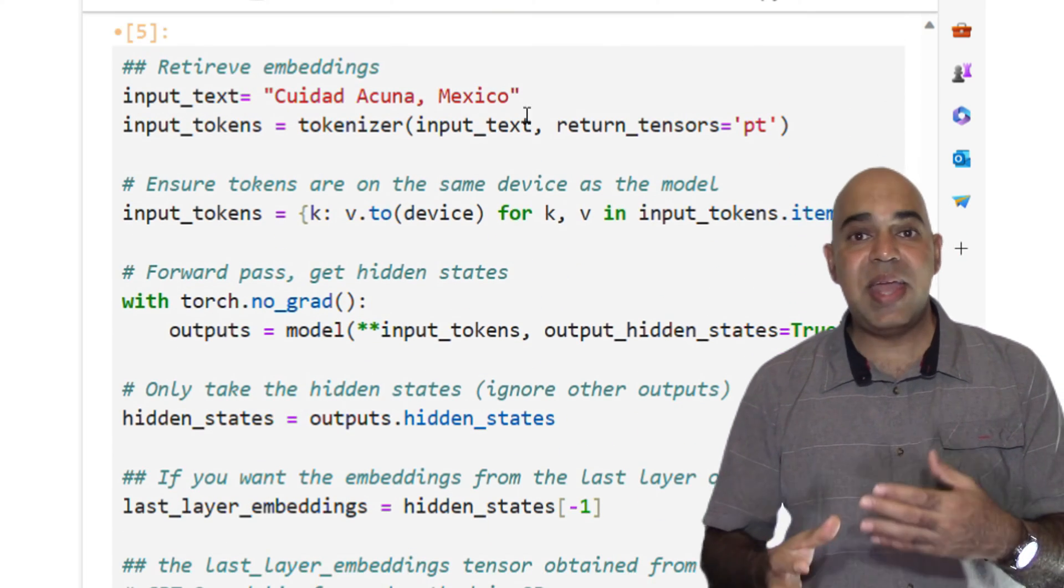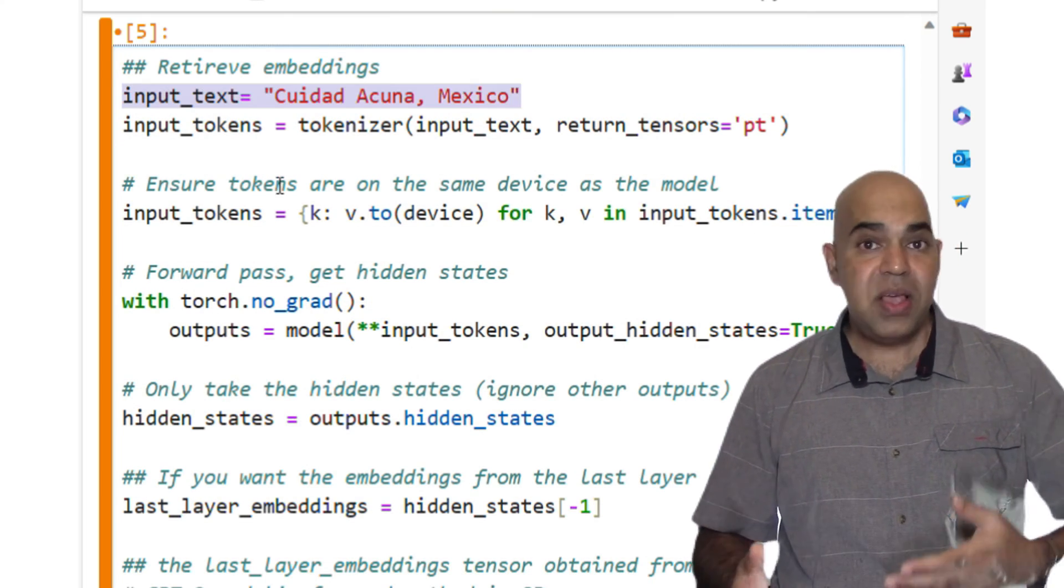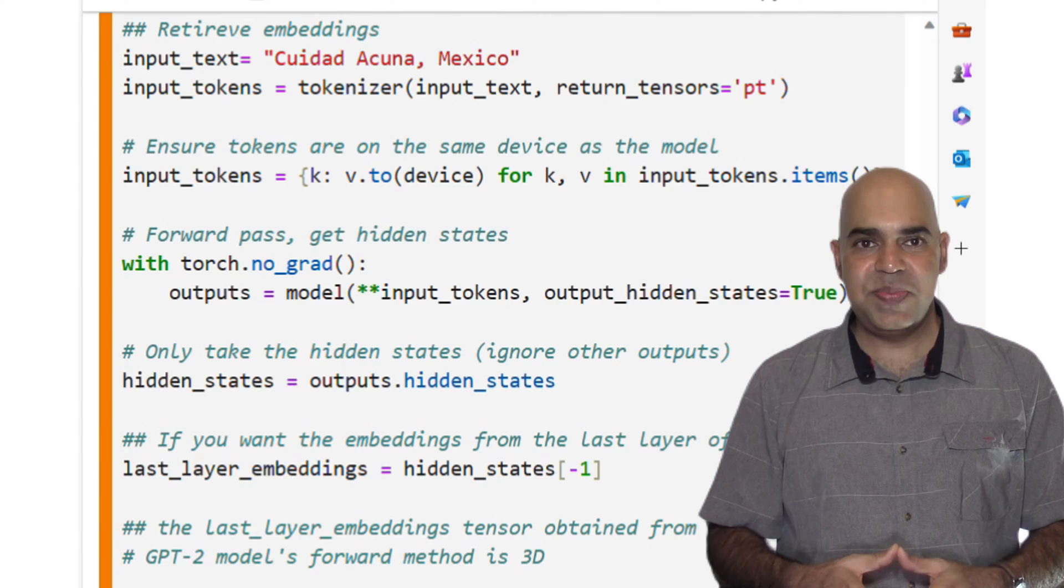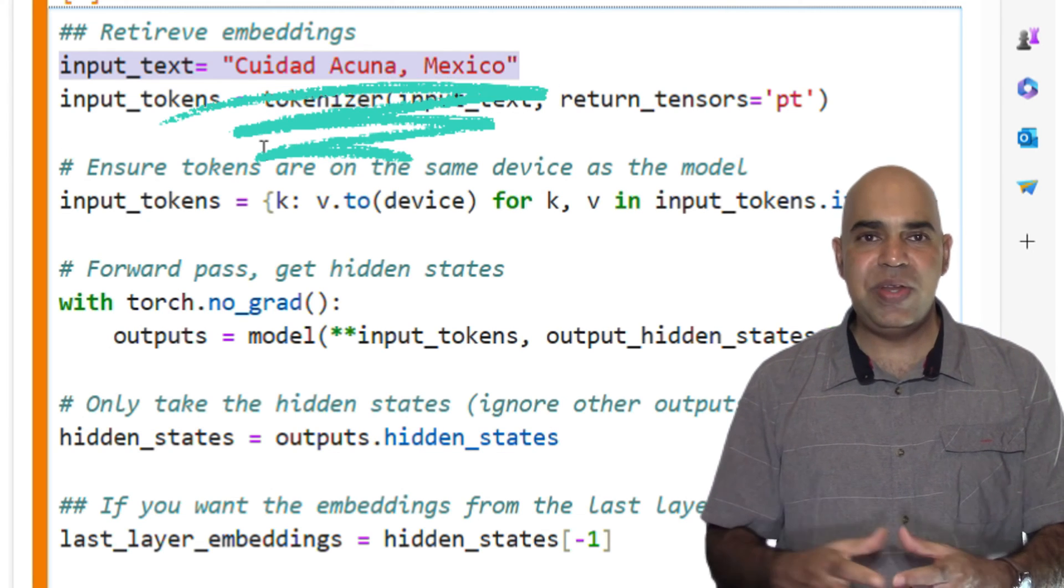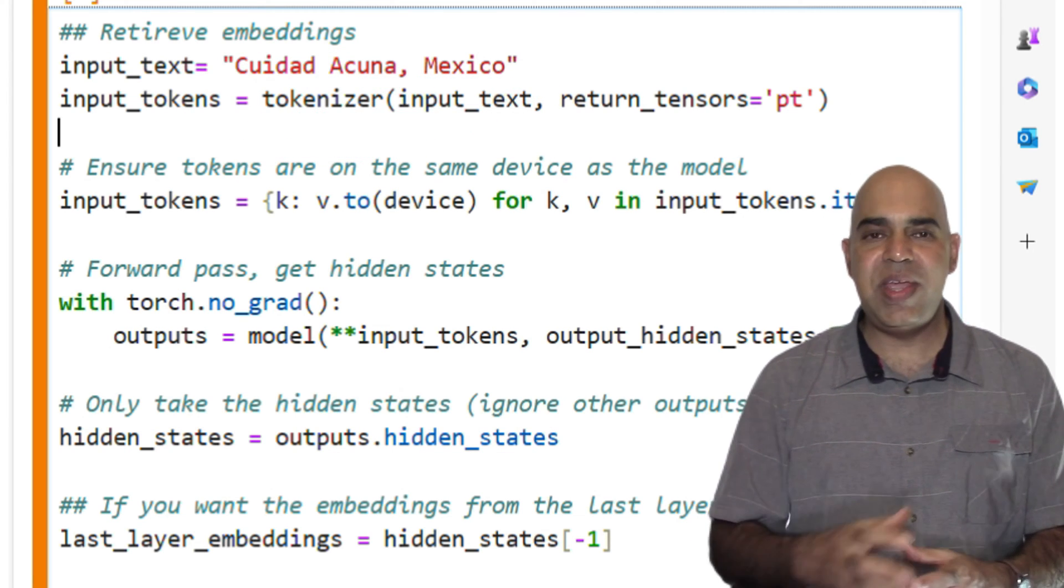The input text can be a word, a phrase, or multiple sentences. Here we have the input text for which we want to create the embeddings.